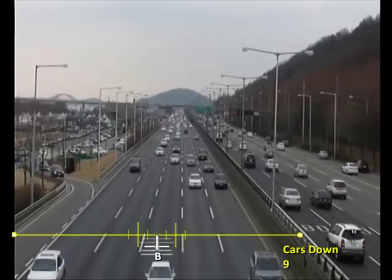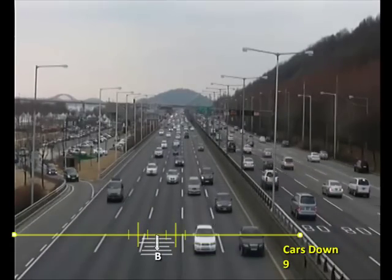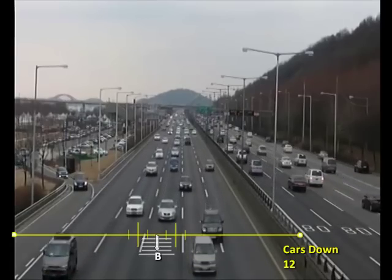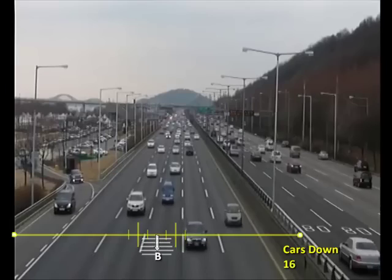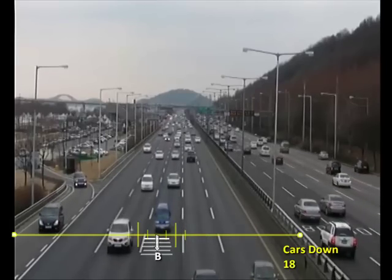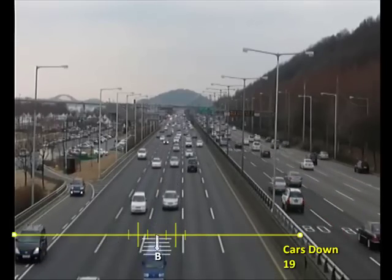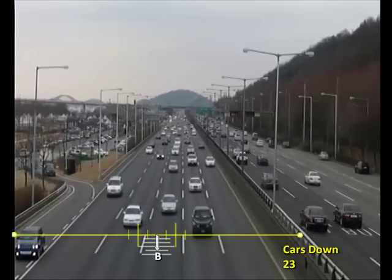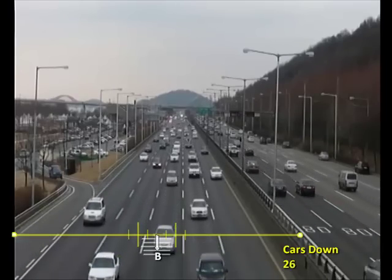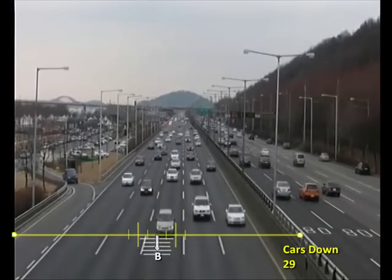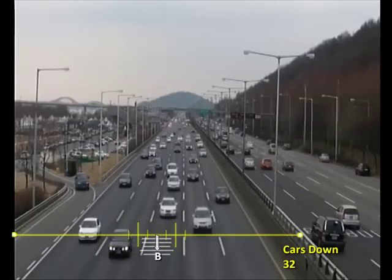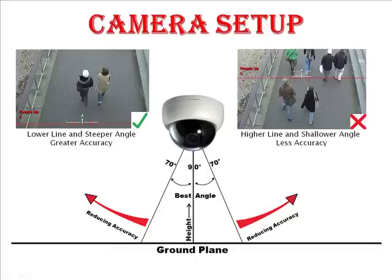Now we have moved on to another application. As can be seen here, the counting line works equally well for counting vehicles. In this case we are monitoring five lanes of traffic with a single counting line, but the system could be set up just as successfully to monitor the same five lanes with five separate lines and five separate counters.